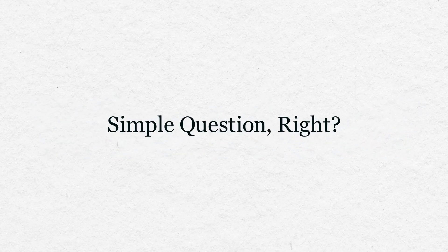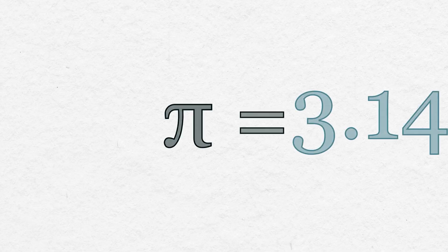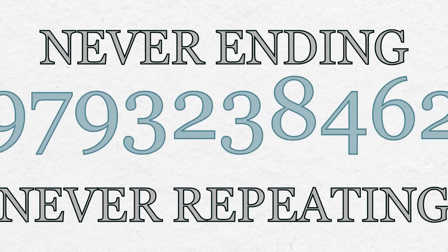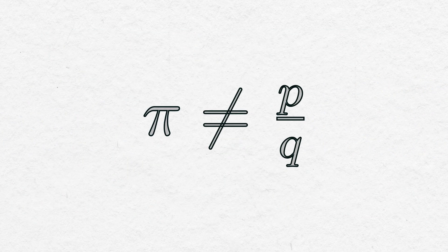What is pi? Simple question, right? Pi is 3.141592, a never-ending, never-repeating number that cannot be represented as a fraction.